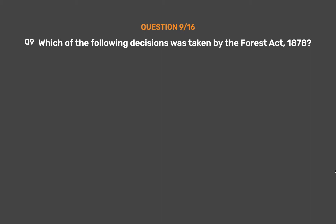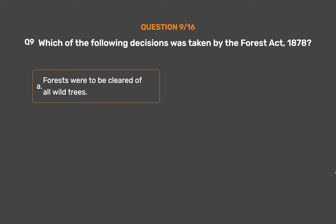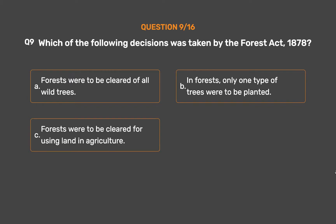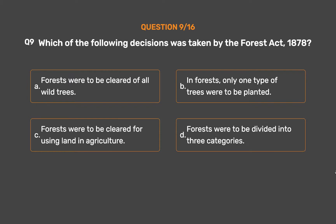Question 9: Which of the following decisions was taken by the Forest Act, 1878? Option A: Forests were to be cleared of all wild trees. Option B: In forests, only one type of trees were to be planted. Option C: Forests were to be cleared for using land in agriculture. Option D: Forests were to be divided into three categories.